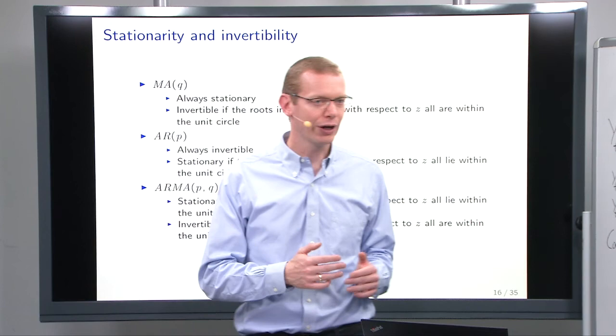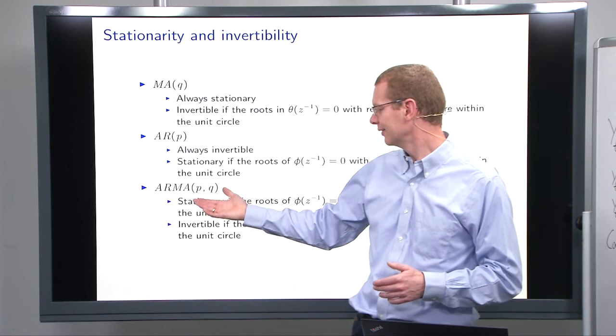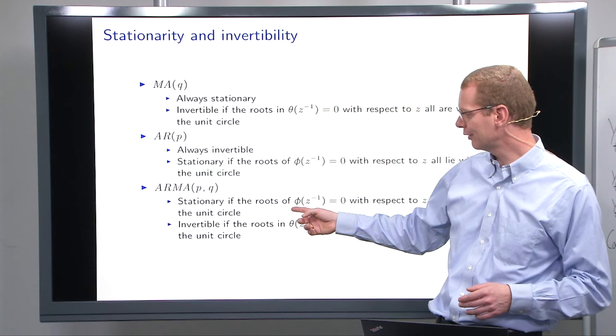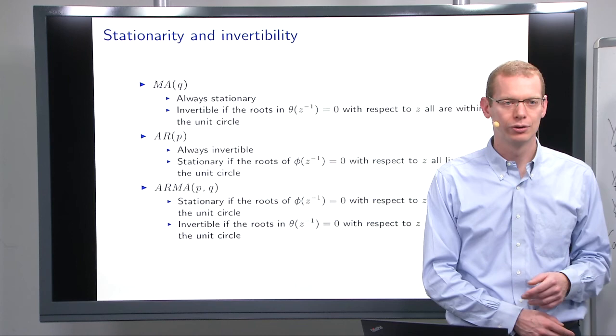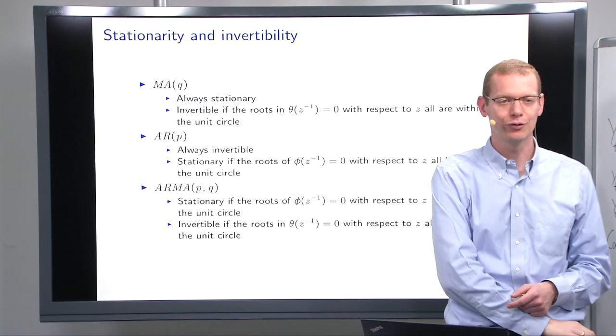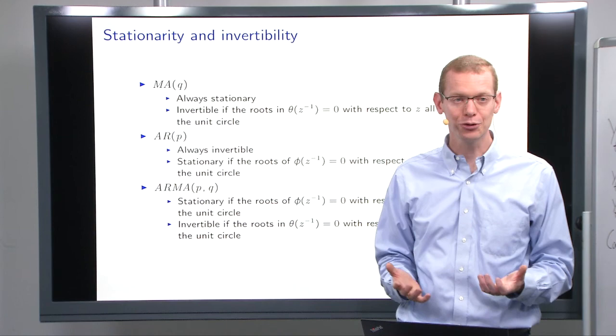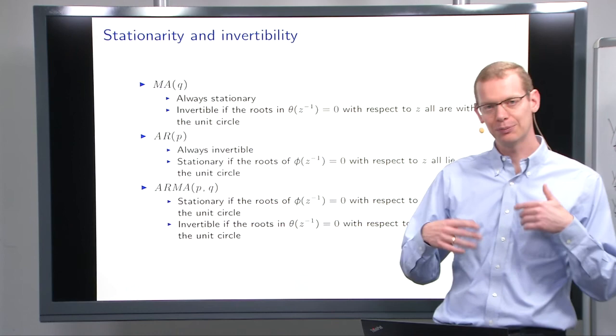Now, finally, the ARMA model here, well, you kind of have to look at the stationarity of the roots of the phi polynomial, and here, for invertibility, you have to look at the roots for the theta polynomial. So, basically, you take the complicated part from the MA and the complicated part from the AR part, and that's where we are. Most often, what we'll care about is stationarity and not so much on invertibility, but that depends on the application.